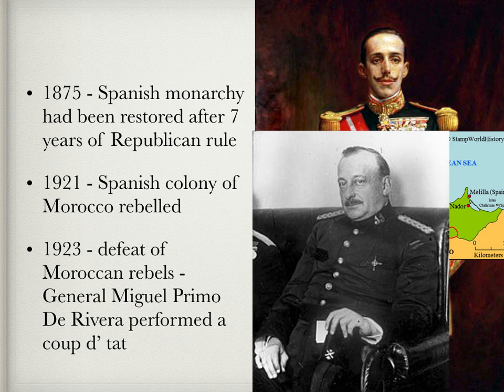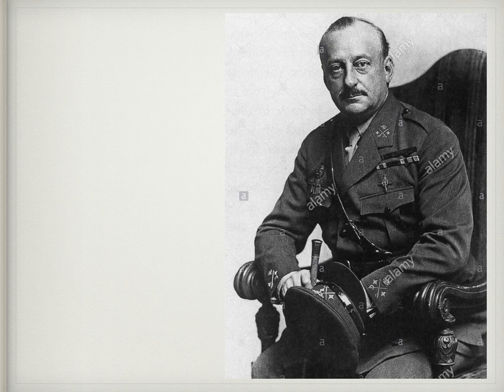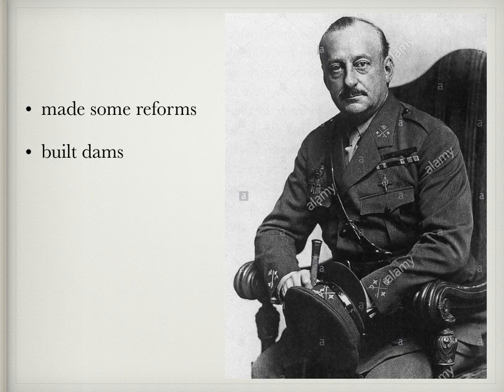After the defeat of the Moroccan rebels, General Miguel Primo de Rivera, seen here in the foreground, in 1923 performed a coup d'état and ran the country as a dictatorship. Under de Rivera's leadership, we do see some improvements — he brought in reforms, dams were built, there was increased hydroelectricity, and an overall improvement to transportation.